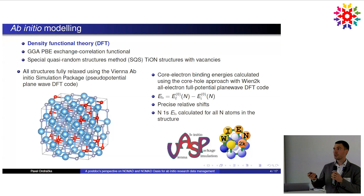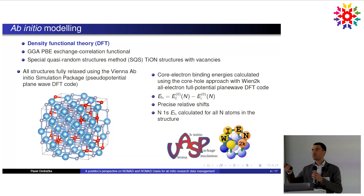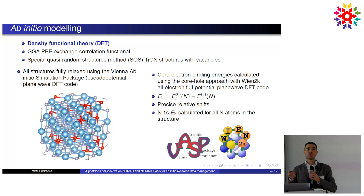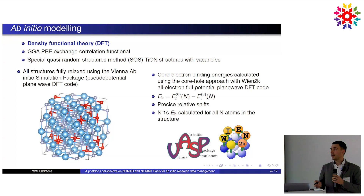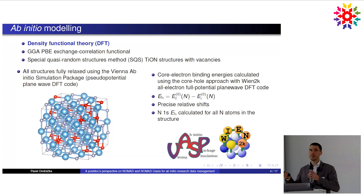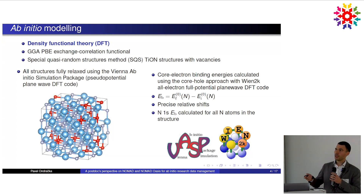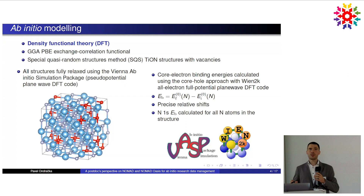In the core hole approach, you calculate the ground state as usual, then remove one electron from one specific atom at a specific core level, put it at the Fermi level, and get the new energy of the final state. The binding energy of the core level is simply the difference between those two energies. This is a crude approach — you don't get correct absolute binding energies or features like satellites — but you can get quite precise relative binding energy shifts. You do this for all nitrogen atoms in the structure, get an energy histogram, and from that you get something resembling a spectrum.